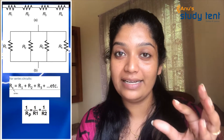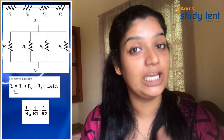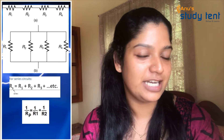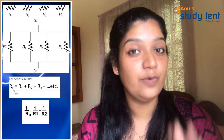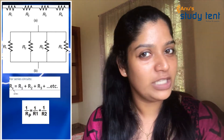We also have a parallel connection, where all resistors are connected in parallel. For R1, R2, and R3 in parallel, the effective resistance Rp is given by: 1 by Rp is equal to 1 by R1 plus 1 by R2 plus 1 by R3.